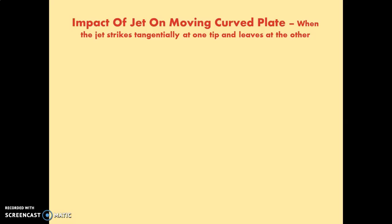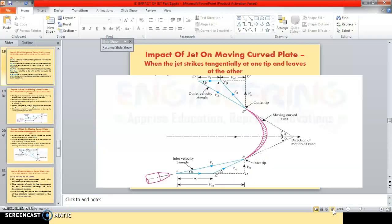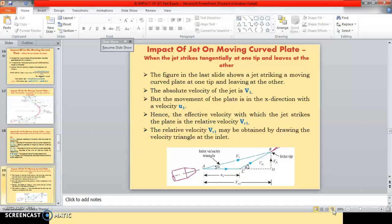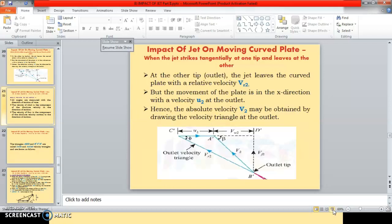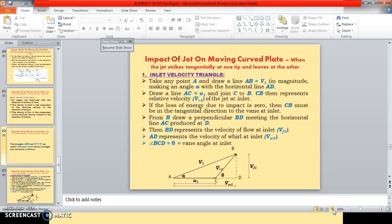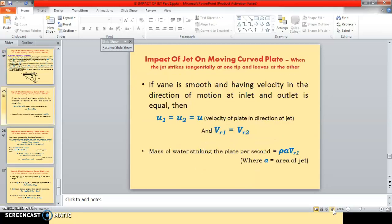The topic is: impact of jet on moving curved plate when the jet strikes tangentially at one tip and leaves at the other. In the first part we saw the diagram, all the abbreviations, the inlet velocity triangle and the outlet velocity triangle. In the second part, we saw how to draw the inlet and outlet velocity triangles.